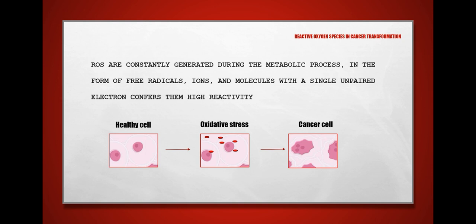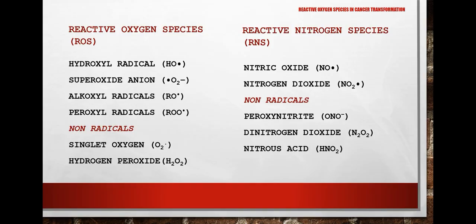A lack of an efficient antioxidant system can lead to oxidative stress, causing various pathological conditions like cancer. As an example, we will see how a healthy cell exposed to high levels of ROS can transform into a cancer cell.